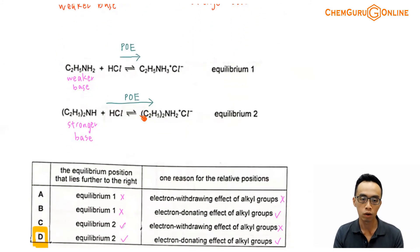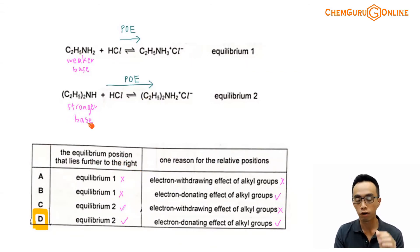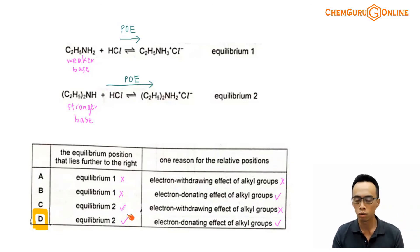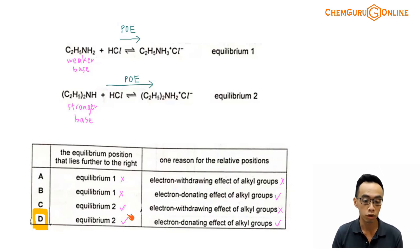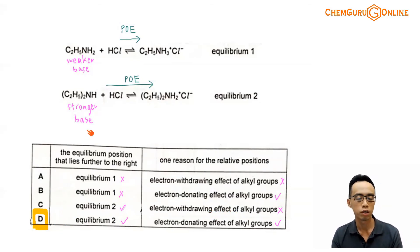So essentially, the equilibrium position that lies further to the right should be equilibrium 2, because it involves my stronger base, diethylamine. So options A and B are eliminated, and I'll choose between C and D. Since alkyl groups are electron-donating, not withdrawing, I can eliminate option C, which states that alkyl groups are withdrawing. Therefore, the answer to this question is option D.